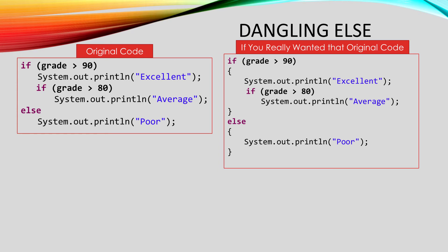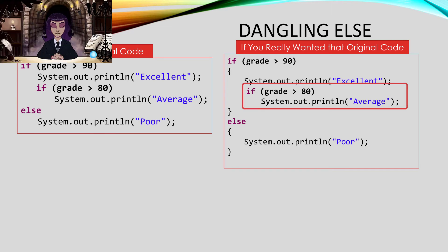However, this code clearly doesn't give the behavior we'd expect. In fact, there are no values that will cause "average" to be output. To see why, think about when grade is 85 — that will make the first if false, so the else block will be executed and "poor" will be output. More specifically, the condition comparing grade to 80 will always be true when it's executed, because it is inside a block that requires grade be greater than 90, so everything that gets into that block must be bigger than 90, and so it's also bigger than 80.